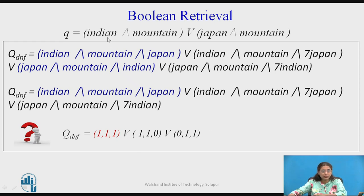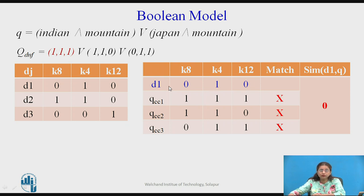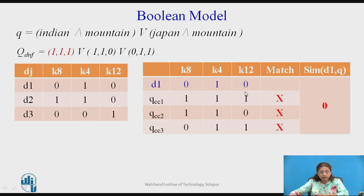Once you have converted the Boolean expression into the weight vector, we start the retrieval part — finding the similarity of each document. The relevant keywords in the query are K8, K4, and K12. For document D1, the weight of these keywords is 0 1 0, whereas QCC component 1 requires 1 1 1 — not matching. The second component also does not match. For the third component, 1 and 1 match but 0 and 1 do not match. Since no component matches this weight vector, the similarity of D1 is 0.